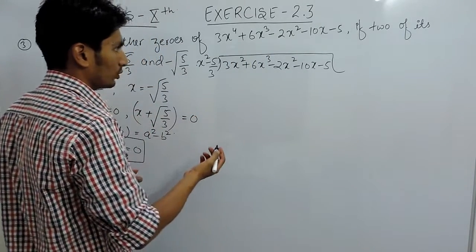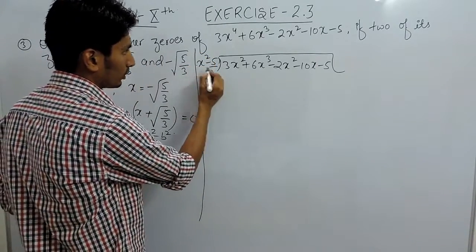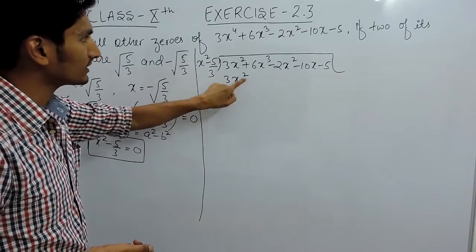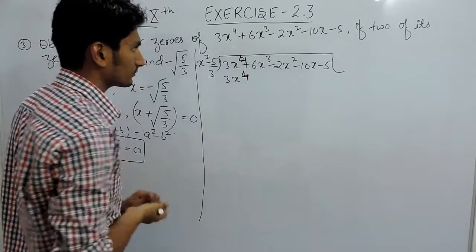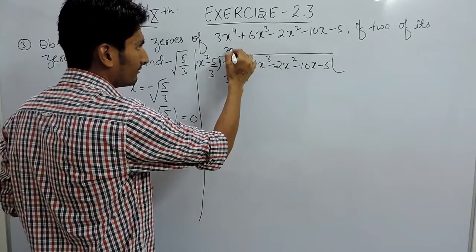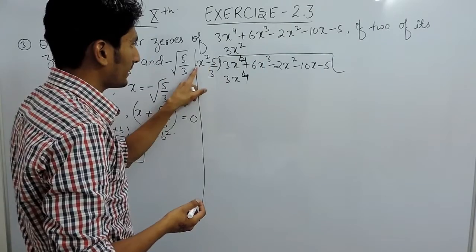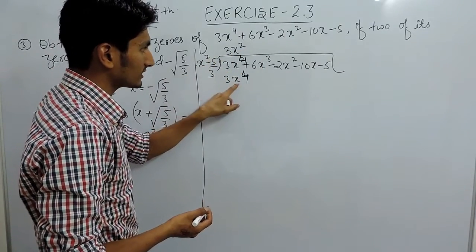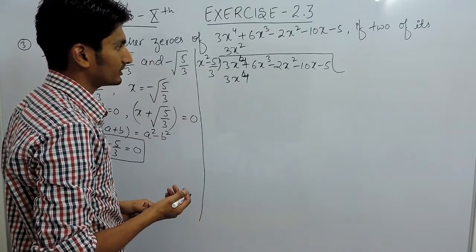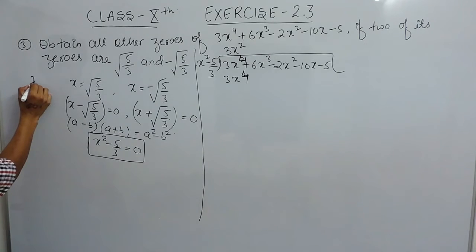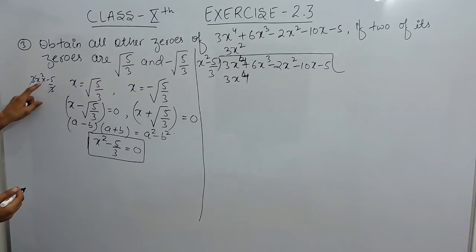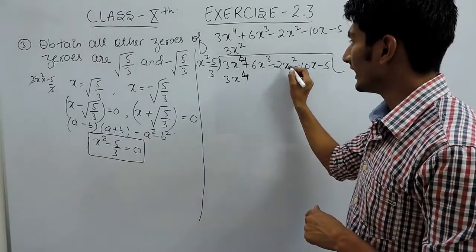Let's perform the division. To make the leading term 3x⁴, we need to multiply x² by 3x², since 3 × 1 = 3 and x² × x² = x⁴. Then multiplying 3x² by (-5/3): the 3s cancel, giving -5x². We write -5x² and rearrange as +4x² before subtracting — sign changes, and +3x² remains.